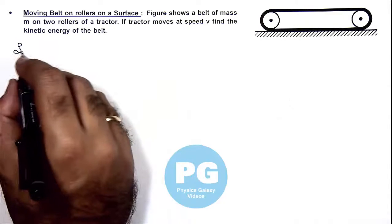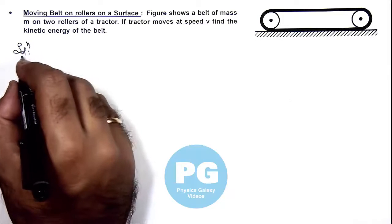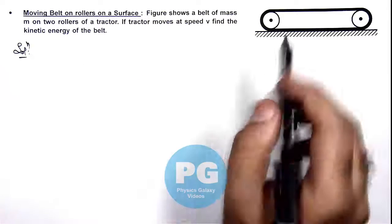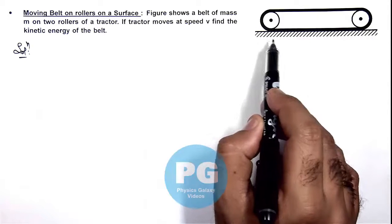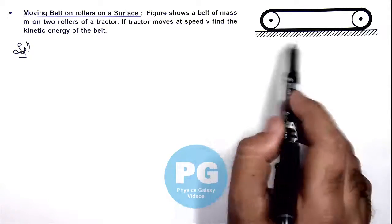Here, to analyze the situation, we first need to consider different parts of the belt so that we'll be able to calculate their kinetic energy separately.